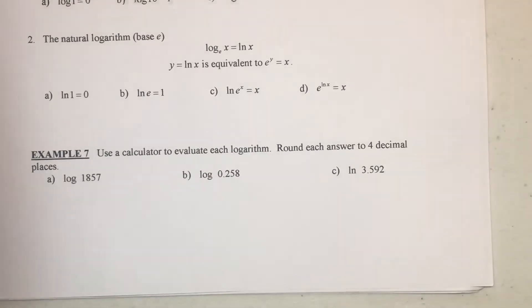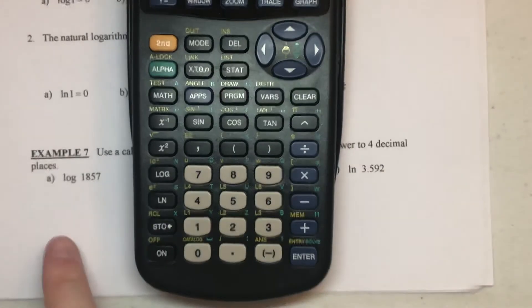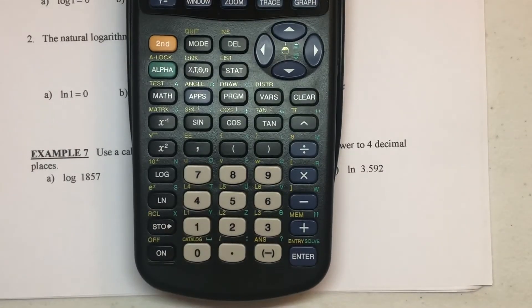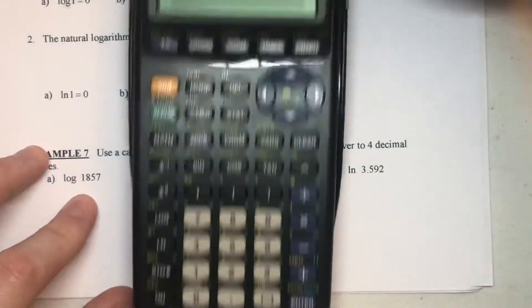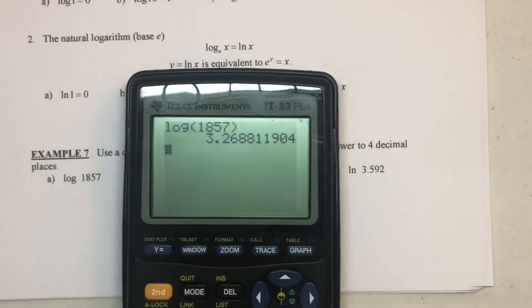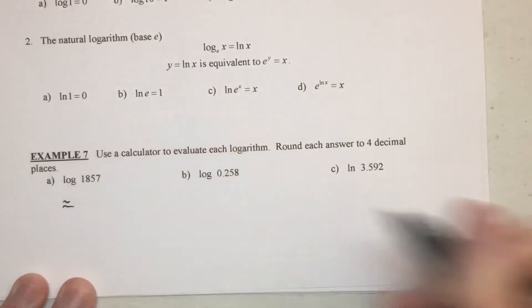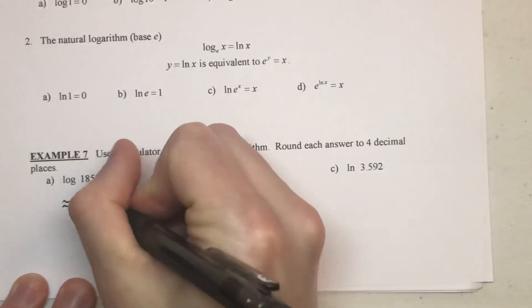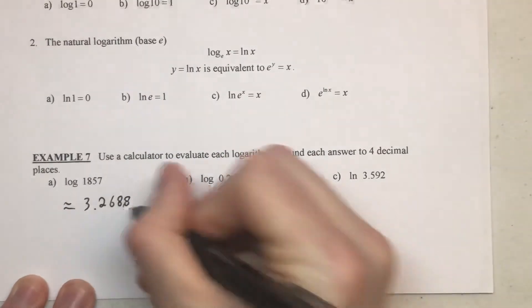We don't do much with estimating, but just so you know how to use your calculator. If you've got your graphing calculator, it is as simple as just hitting the log button and then typing that number 1857. It looks just like that. You hit enter, you get a decimal. So to approximate that one to four places, 3.2688 would be the estimate.